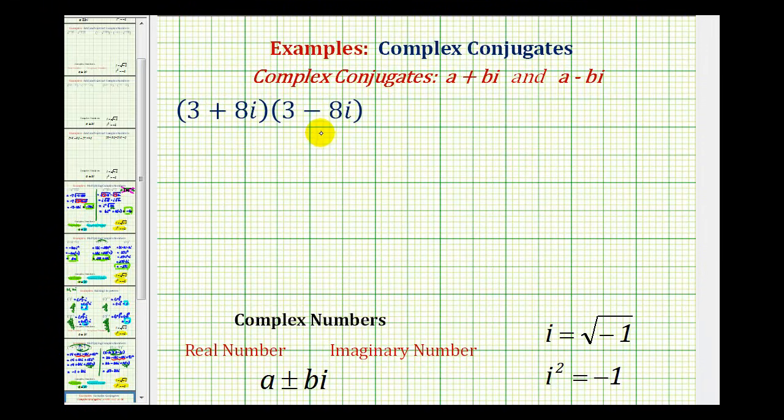Now we're going to multiply complex conjugates. Complex conjugates are complex numbers in the form a plus bi and a minus bi, which means the real numbers and the imaginary numbers are the same, but one is a sum and one is a difference.